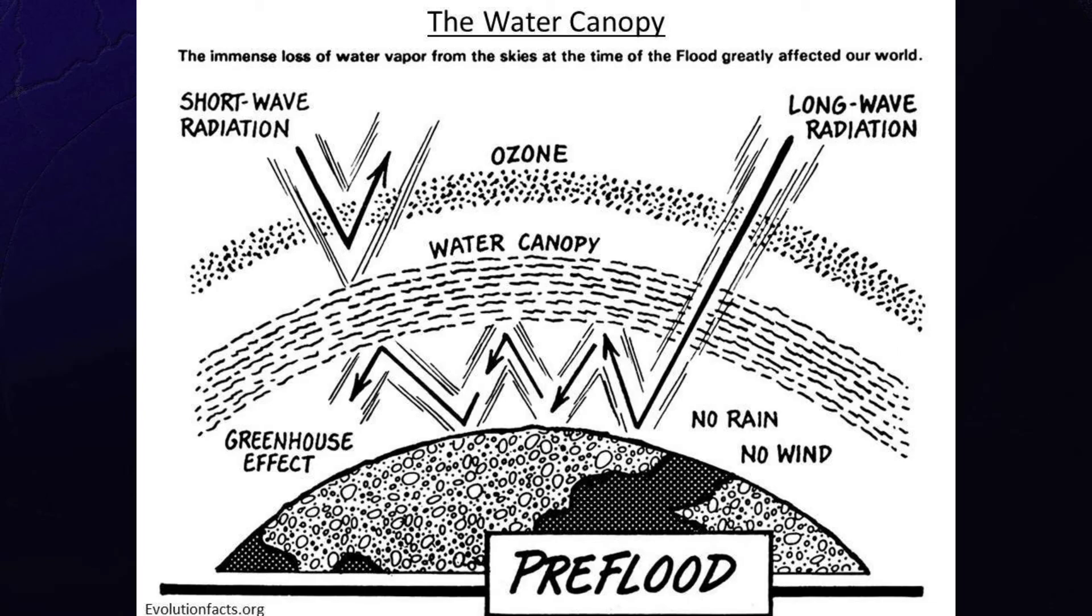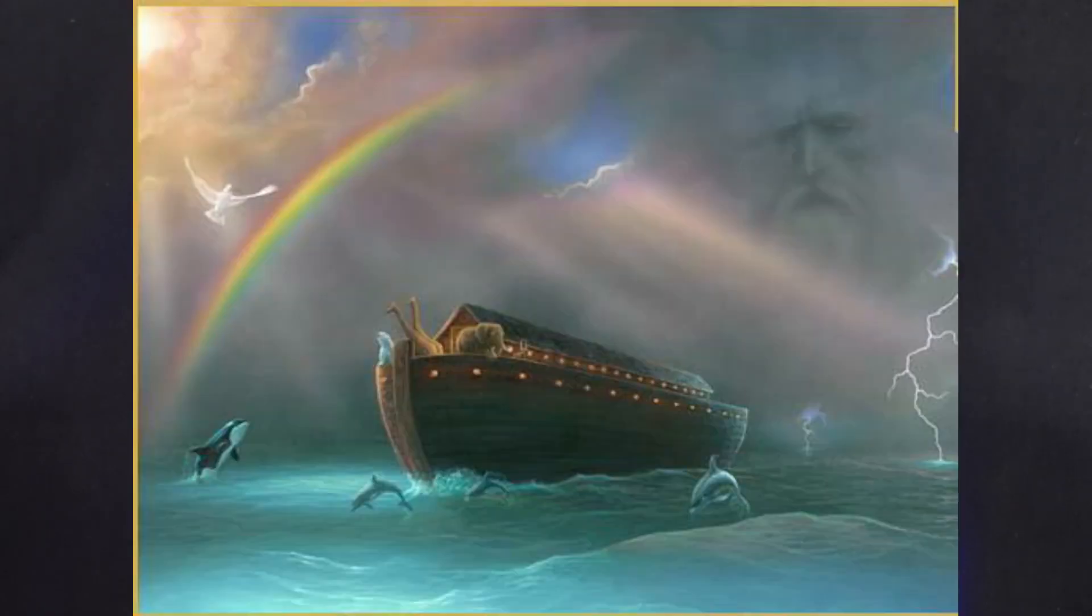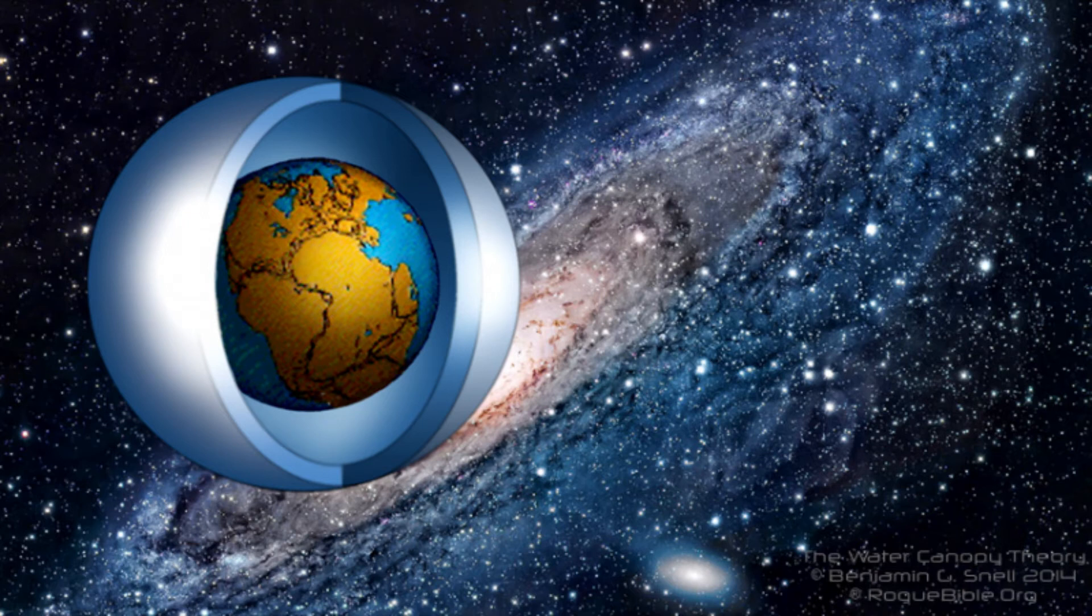So that's what we had before the flood, a water canopy above the present sky. Of course, that all came down at Noah's flood, which is 4,400 years ago. But the effect of this water canopy was actually huge. It created a wonderful temperate greenhouse effect of the whole of planet Earth.